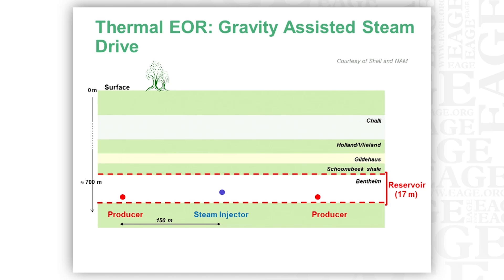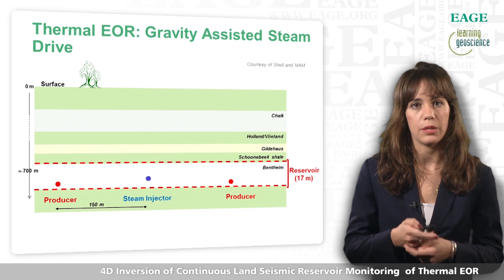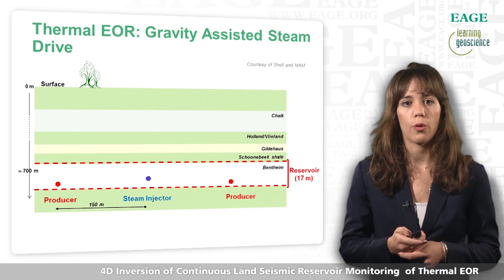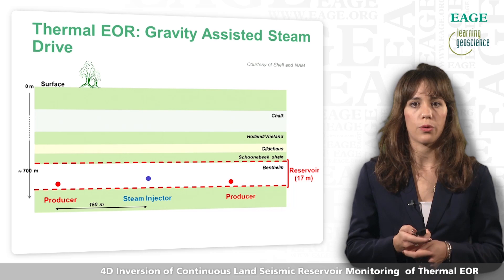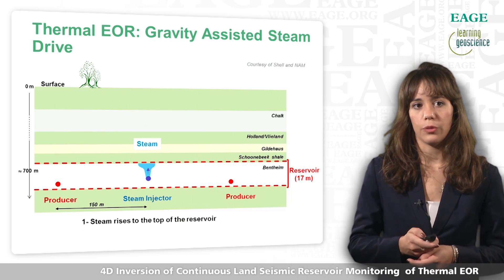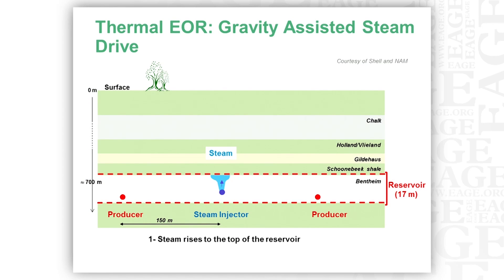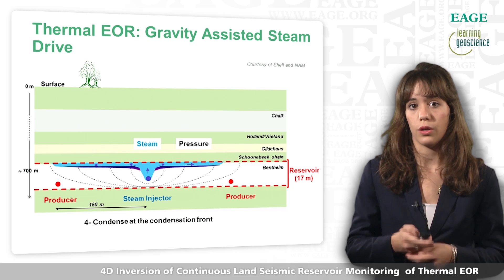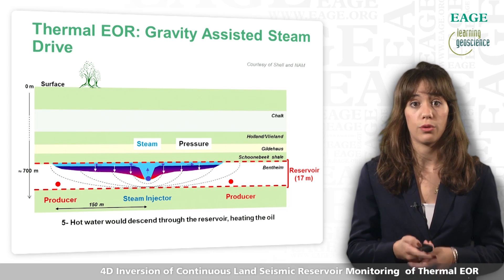The following animation represents an ideal animation of Schoonebeek reservoir behavior under steam injection. The reservoir is located between the two red dashed lines. The horizontal injector is the blue point and the two horizontal producers are the two red points. In Schoonebeek, in a homogeneous reservoir, steam injected at low pressure is expected to rise to the top of the reservoir. Very rapidly, the entire reservoir will be under pressure. Steam should spread horizontally, condense, and hot water will descend through the reservoir, heating the oil and improving its mobility.